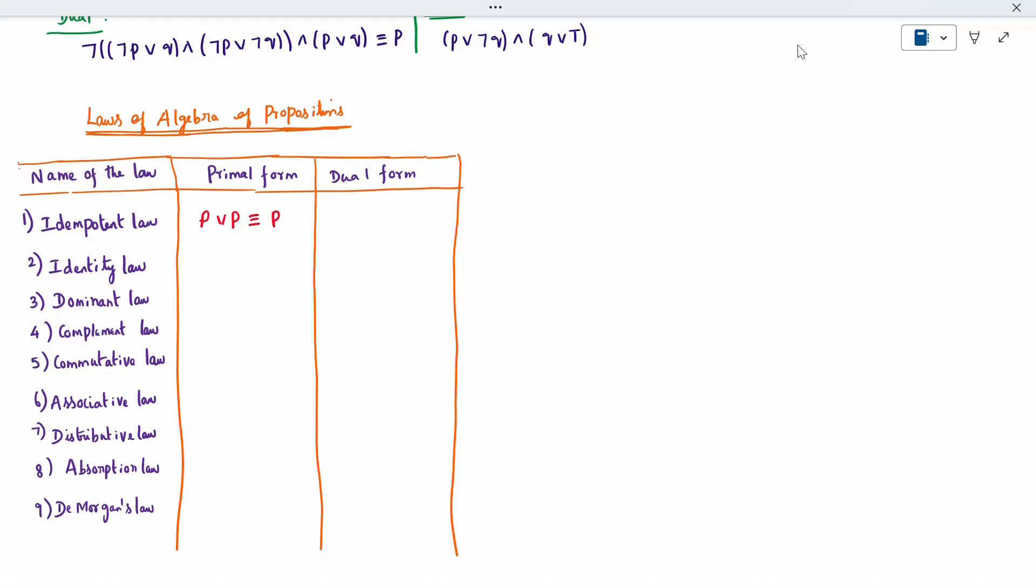Dual, how we have to write? First I will write all the formulas related to primal. Dual, I will show you easily we can write it. Identity law means how to write the identity law. The identity law, what we write means when it is p proposition. When p conjunction false, what statement, then we get the same p. It is called identity law.